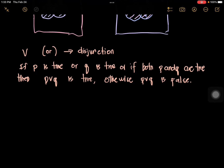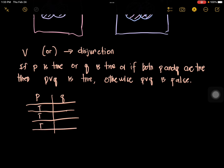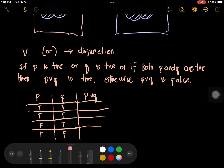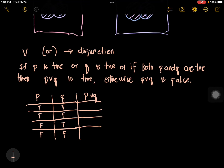Let's have a table form so we understand it better. P and Q are propositions — declarative statements. In the truth table: when P is true and Q is true, P or Q is true; P true and Q false gives true; P false and Q true gives true; P false and Q false gives false. So as long as at least one proposition is true, the disjunction is true. This is the truth table under disjunction.